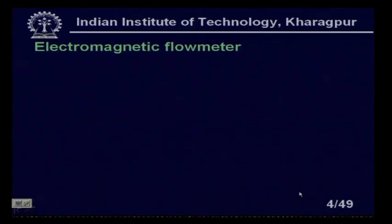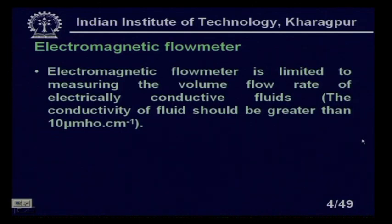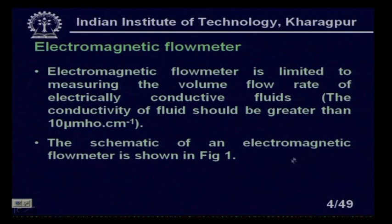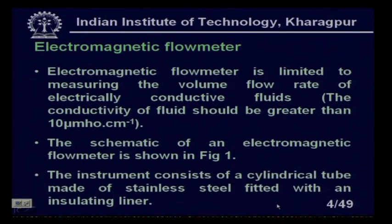Electromagnetic flow meter is limited to measuring the volume flow rate of electrically conductive fluid. The conductivity of the fluid should be greater than 10 micromho per centimeter. If it is less than this, the flow meter will not work. However, there is no higher limit on the conductivity. In some situations, the pipe and electrode installation will be different if the conducting liquid has very high conductivity.